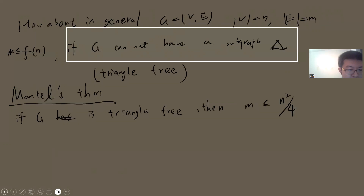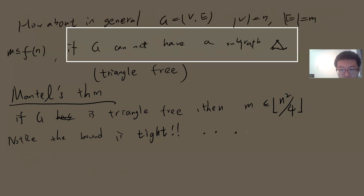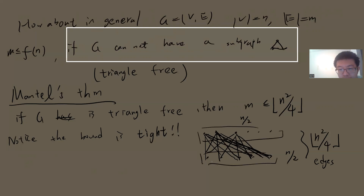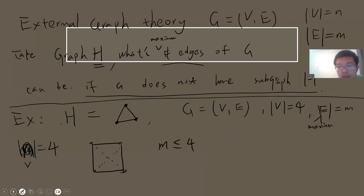To be more precise, one can take the floor function. Notice that the bound is tight, and the reason is very simple. We can take n divided by two points on each side and form a bipartite graph — connecting every vertex from one side to every vertex on the other side. In total we have n squared divided by four edges, and there is no triangle because there are no edges connecting points within the same part. The rest of the video proves Mantell's theorem.